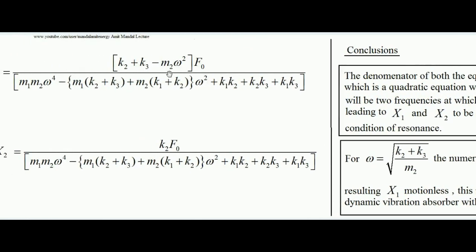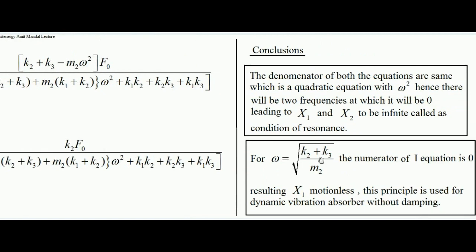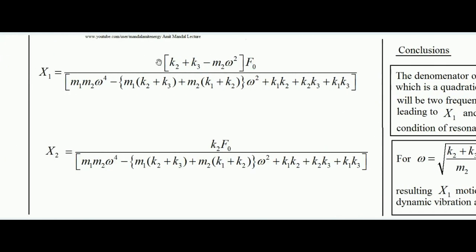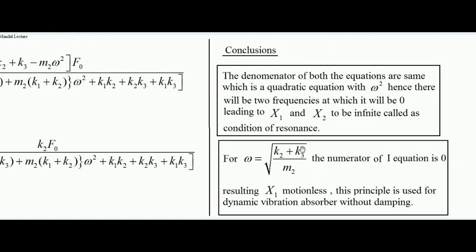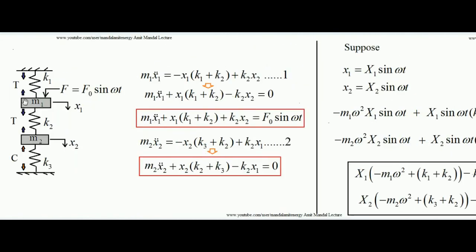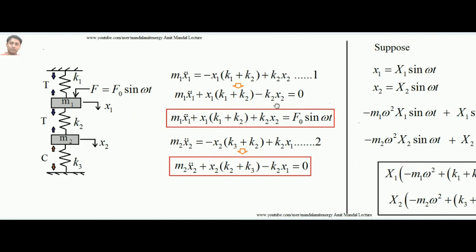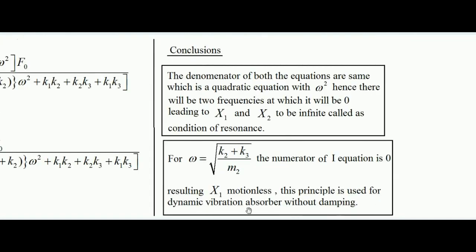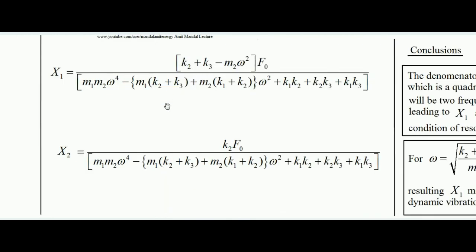Additionally, from the expression for X1, if ω = √((k2+k3)/m2), the numerator of X1 becomes zero, meaning mass m1 will not vibrate at all. Whatever force is applied to m1 is transferred to m2 without any motion of m1. This principle is used for developing a dynamic vibration absorber, which will be discussed in a future lecture.